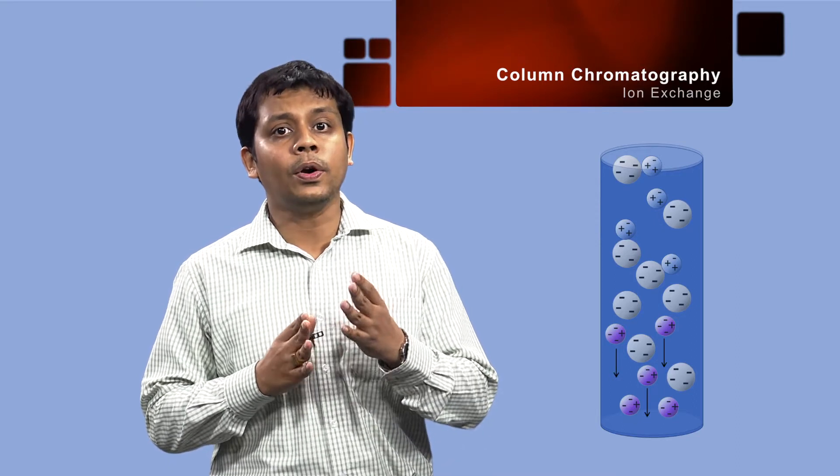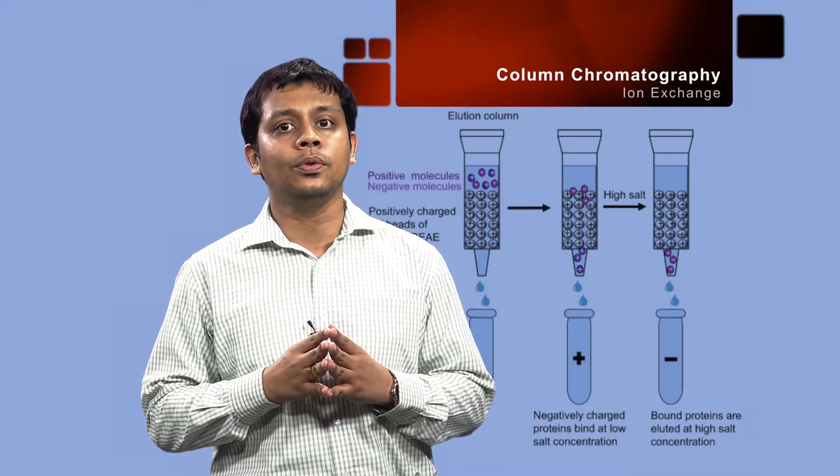A chromatography column is a glass or plastic tube that you set vertically and fill with a stationary phase. You can use differently sized columns to separate samples in amounts anywhere from micrograms to kilograms.